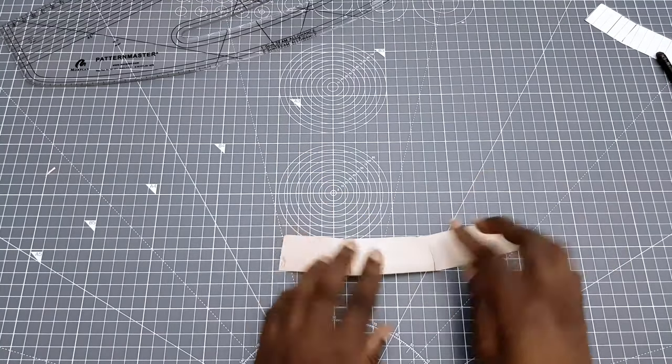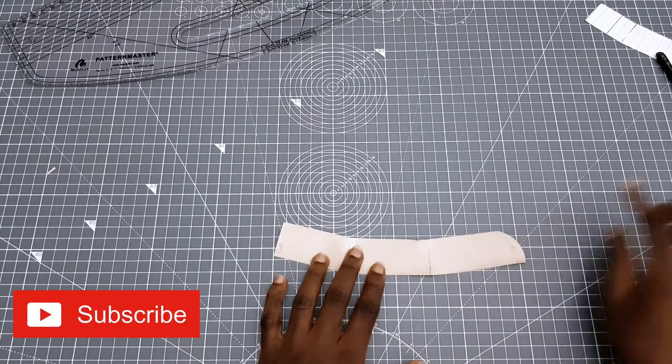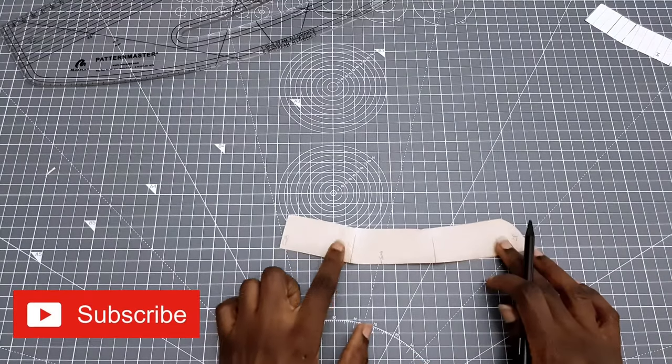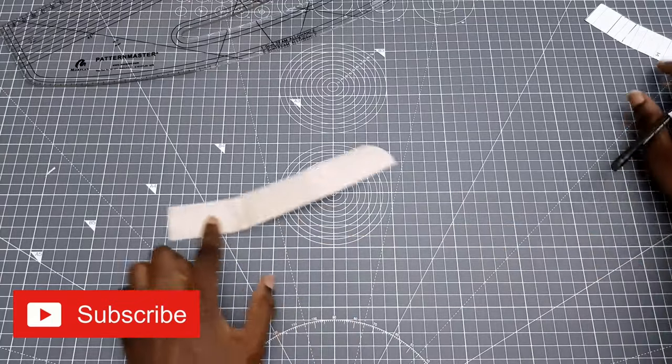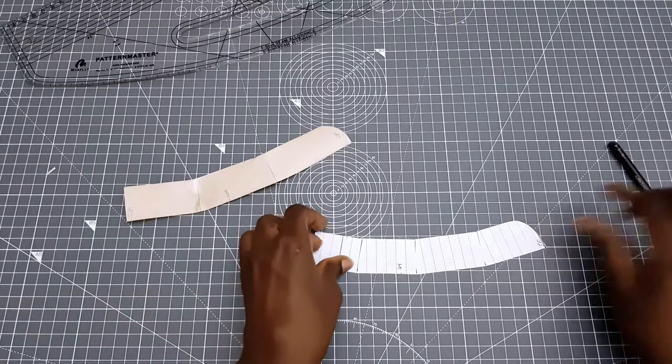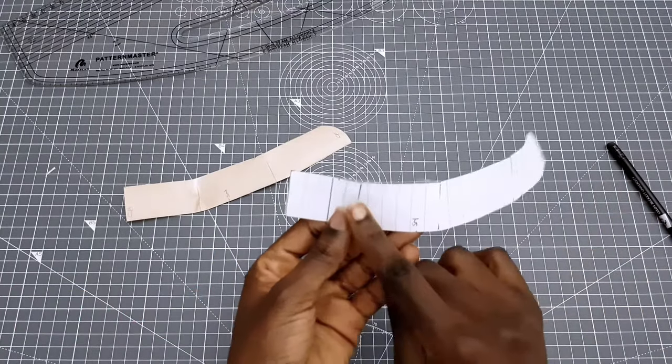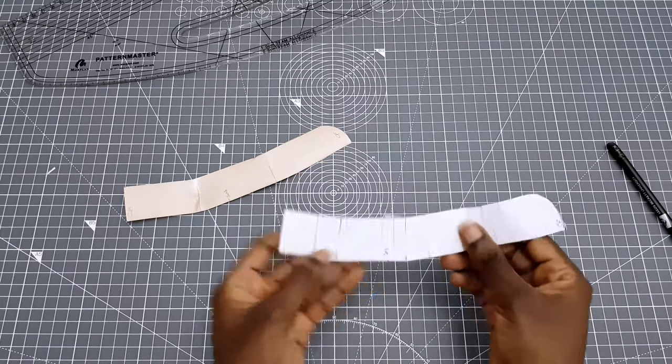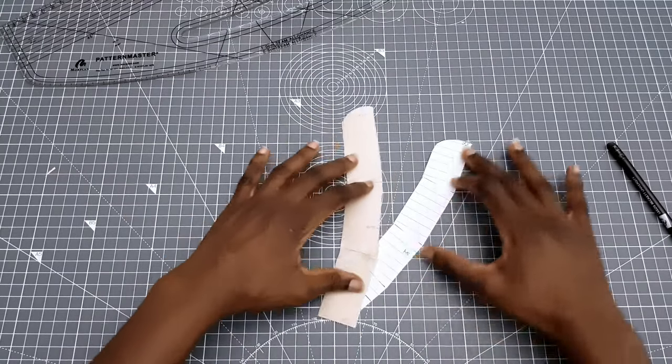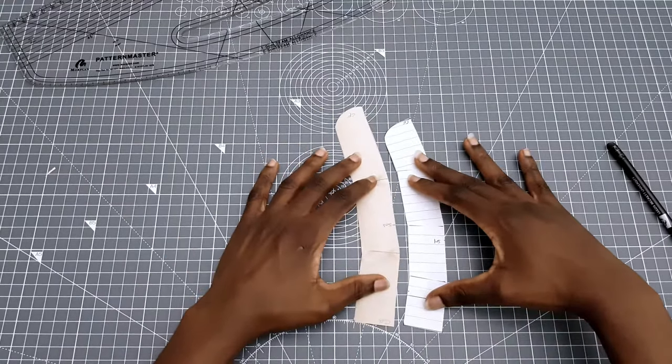As you can see this has created a very nice curved collar both at the top and at the bottom. And like I said the white one was cut into four sections which has created a really nice curve. So if I was to use the white one it would sit very close to the neck.